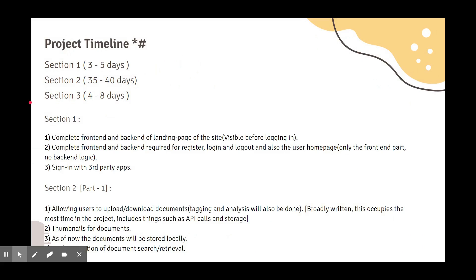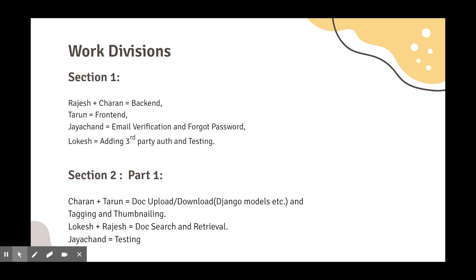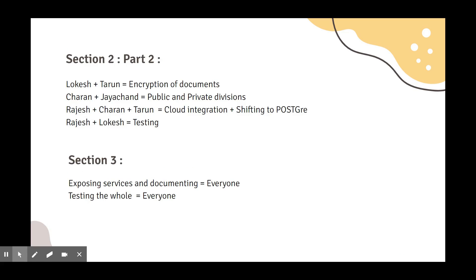We have divided the implementation plan into three phases as shown. All the dates mentioned here are tentative, and a more detailed form of work division will be shown in the artifacts and the Gantt chart. This is the project timeline and these are the work divisions. I would like to conclude the presentation and look at our team members.